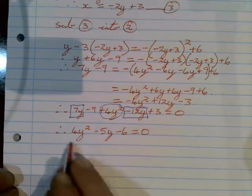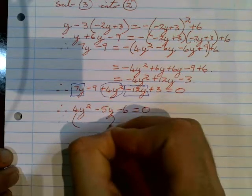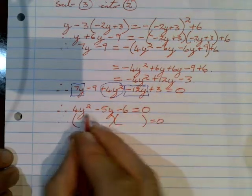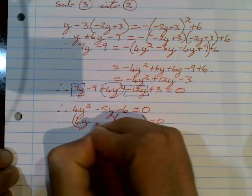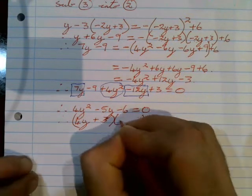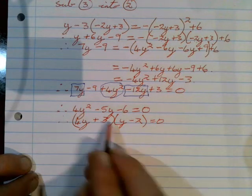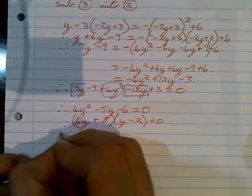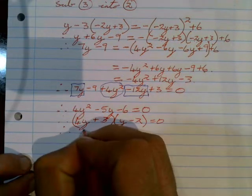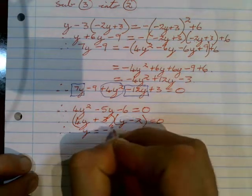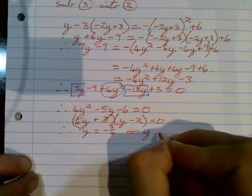You should notice this is now a trinomial, and we need to solve for y, so we factor into two brackets. Using your calculator to find the factors, this gives us (4y + 3)(y − 2). Making the first bracket equal to zero gives y equals minus 3 over 4, and doing the same with the second bracket gives y equals 2.